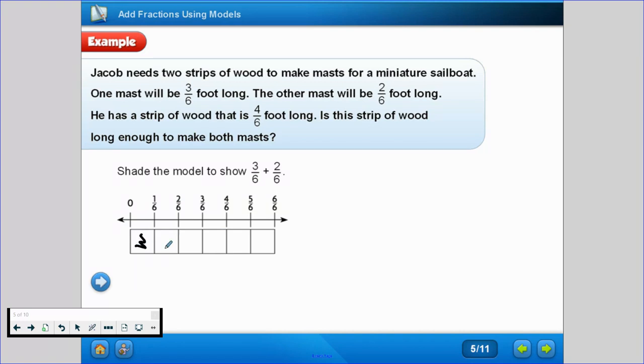First, we'll shade the 3/6. As you can see, we've got 0 to 6/6, that's our whole. Let's see: 1, 2, 3, there's our 3/6. Now plus 2: 1, 2, there's our 2/6. So Jacob only has 4/6 of a foot long. As you can see in our model here, that would only be this much. But we have one more because 3/6 plus 2/6 equals 5/6.